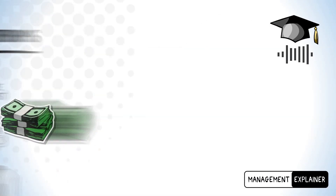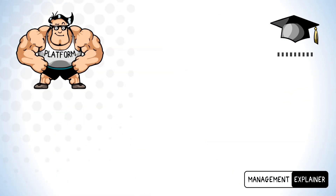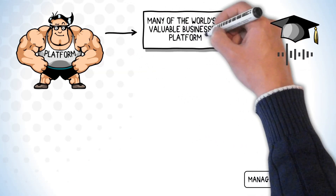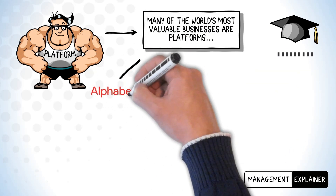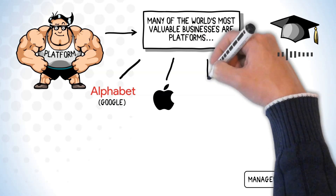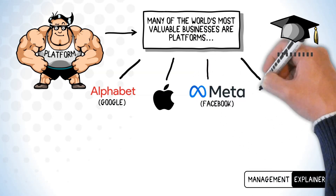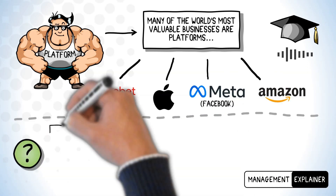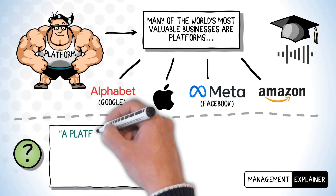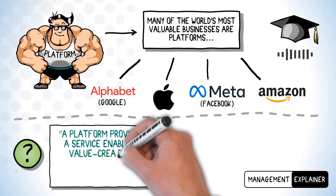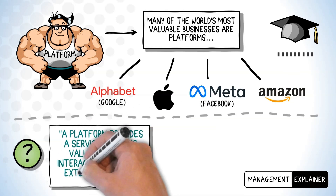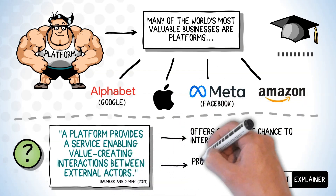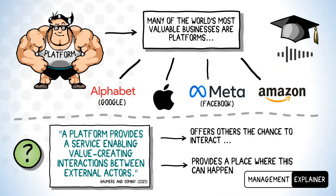Platforms are probably the most powerful kind of business in the present. This is reflected in the fact that many of the world's most valuable businesses are platforms. These include Alphabet, better known as Google, Apple, Meta, who are Facebook, and Amazon. But that doesn't help us with the question of what a platform actually is in the first place. Here's a definition: a platform provides a service enabling value-creating interactions between external actors. This means that a platform offers others the chance to start interacting in a useful way, and provides a place where these interactions can happen.